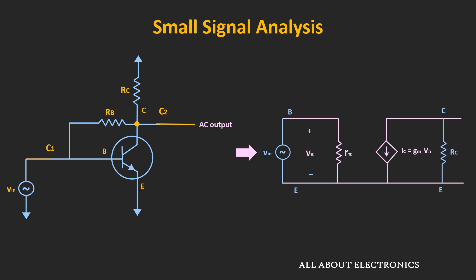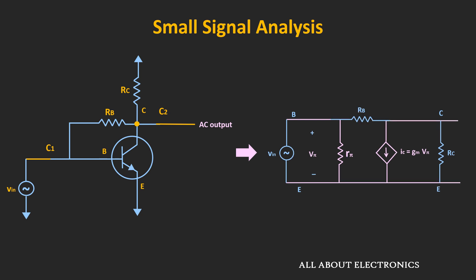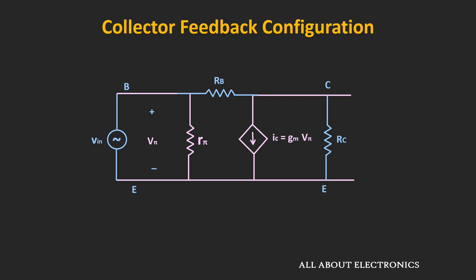In the AC equivalent circuit, it can be shown like this. Apart from that, this base resistor RB is connected between the collector and the base terminal. This is the AC equivalent circuit of this collector feedback configuration. This base resistor RB is connected between the base and the collector terminal, or in other words, it is connected between the input and the output side.